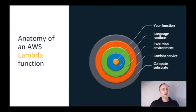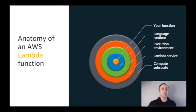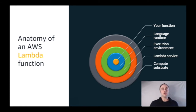Another way of thinking about Lambda function anatomy is like an onion with various layers going from the outermost layer in. First there's the Lambda compute substrate — the underlying compute for all of Lambda. Next there's the Lambda service itself, which manages the scheduling and organization of workloads across hundreds of thousands of customers. Both of these layers are completely invisible to the customer and managed entirely by AWS.